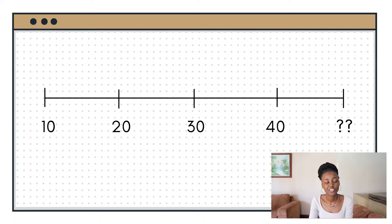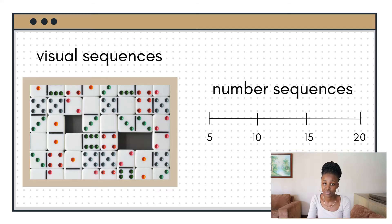That leads us to the next symptom: people with dyscalculia struggle to notice patterns. What you're seeing on screen right now is a number pattern, and the average person will know the number that comes after 40 because they noticed a pattern. A person with dyscalculia may not have this ability — they tend to struggle with seeing a pattern in any sequence and would have to rely on counting to find the answer. If your child struggles with noticing patterns in numerical or visual sequences, such as the dominoes on screen, that may be a sign of dyscalculia. But if your child can notice patterns in various sequences, chances are they do not have dyscalculia.